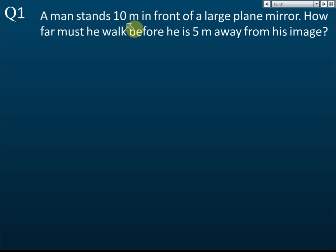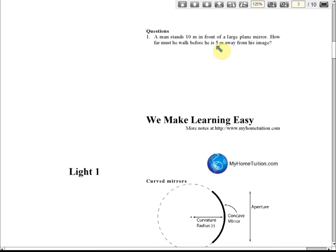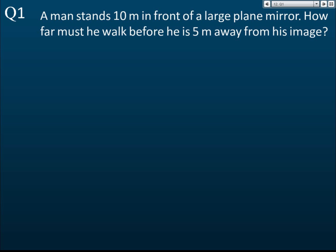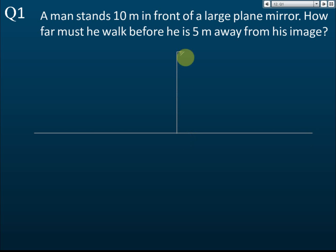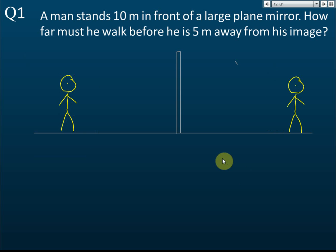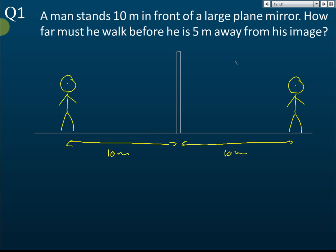Question one: A man stands 10 meters in front of a large plane mirror. How far must he walk before he is 5 meters away from his image? The answer is 7.5 meters. Let's see why. Initially the man is 10 meters from the mirror, so his image is also 10 meters from the mirror on the other side. That means the man is 20 meters from his image.